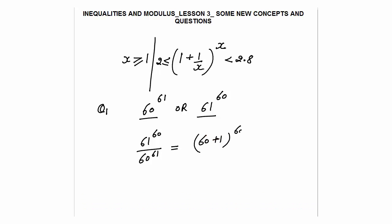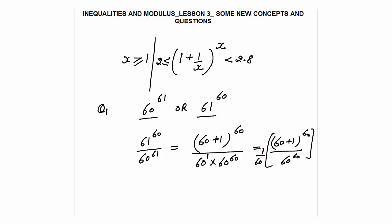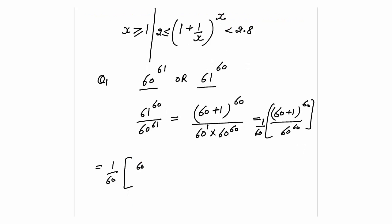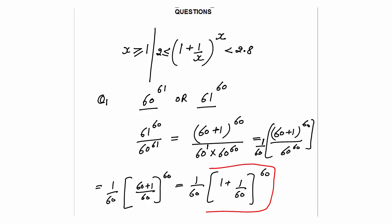I rewrite 61^60 as (60+1)^60, and the denominator as 60^61 = 60^1 × 60^60. Taking 1/60 outside, the fraction becomes (1/60) × ((60+1)/60)^60, which simplifies to (1/60) × (1 + 1/60)^60. This is exactly the form (1 + 1/x)^x with x = 60.